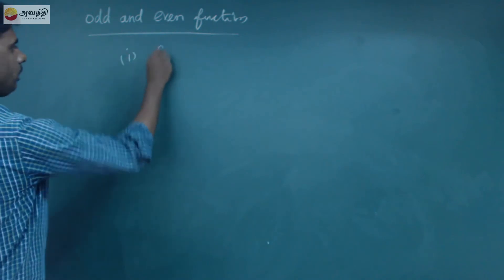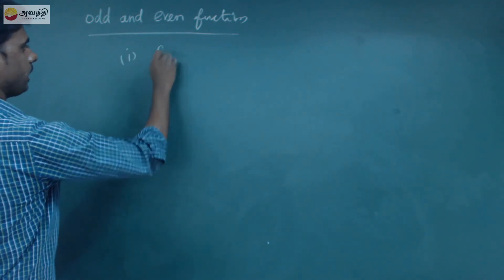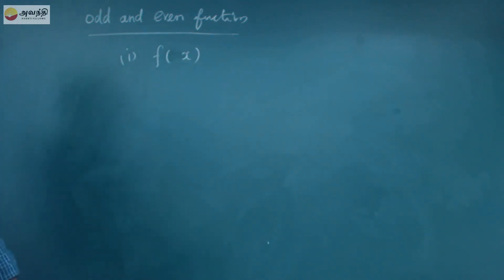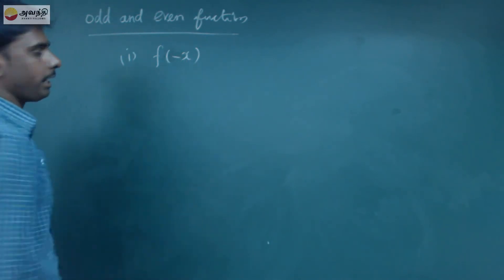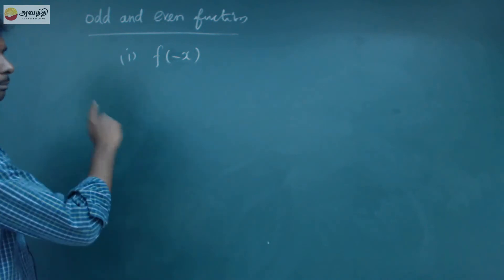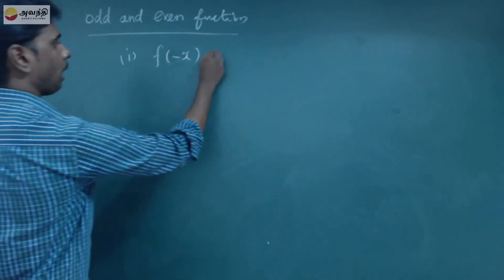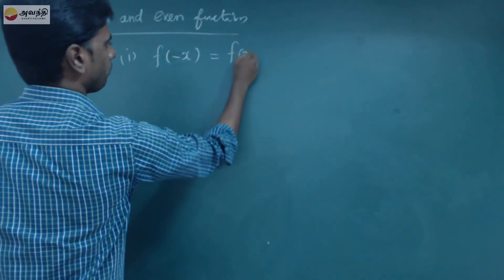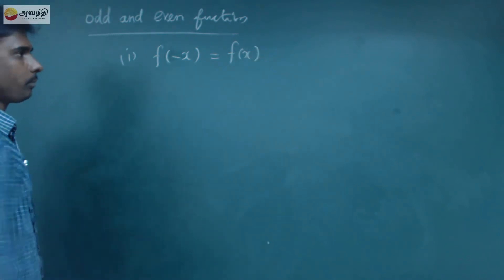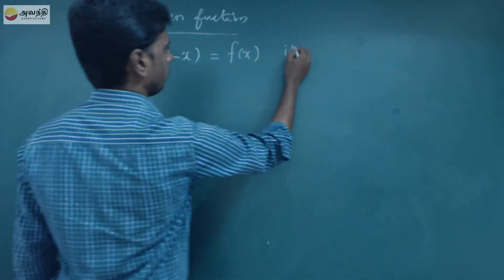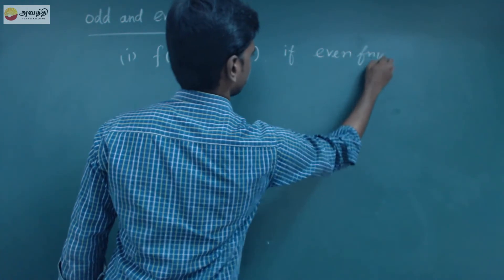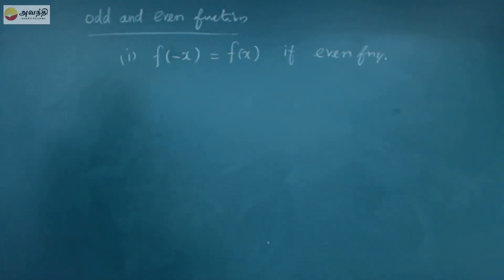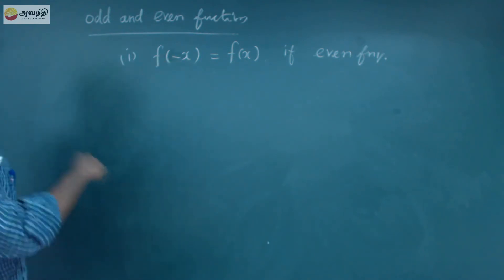Let's see the first one. f of x is a function. In this function, if there is x, we will substitute minus x. If I substitute it, I will get plus f of x. Because what is that function? It is an even function. So f of minus x equals f of x.